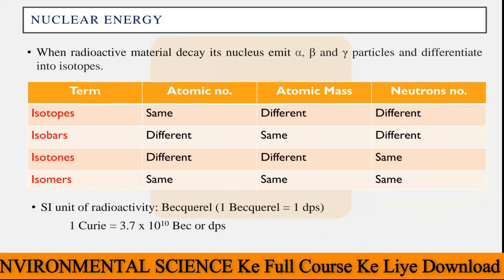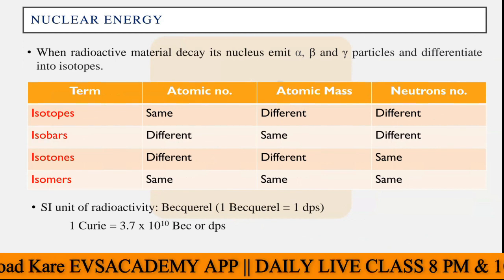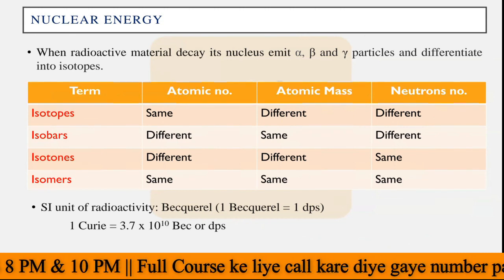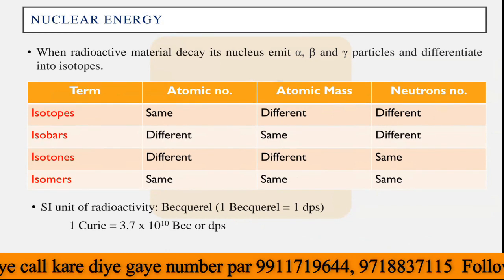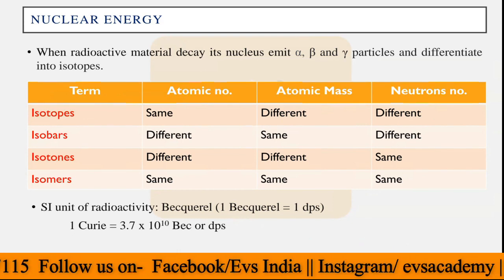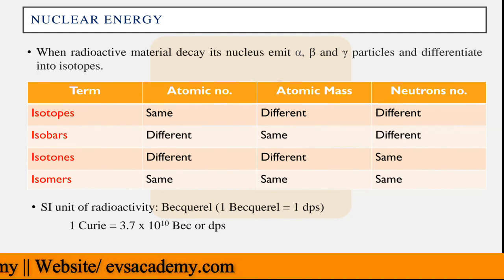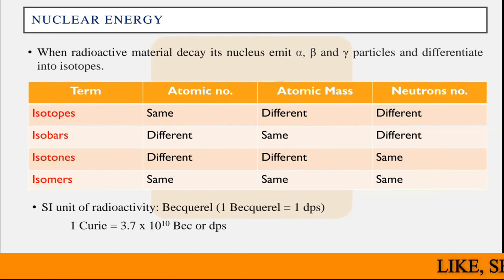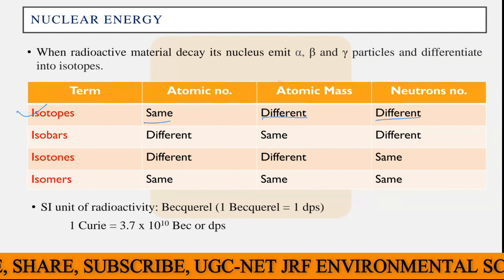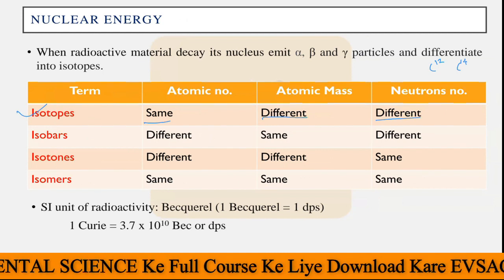The last energy of this unit is nuclear energy. When radioactive material decays, its nucleus emits alpha particles, beta particles, or gamma particles, and differentiates into different isotopes. Isotopes are two different kinds of materials that share the same atomic number but have different atomic masses, because of different numbers of neutrons. For example, carbon-12 and carbon-14 are isotopes of each other.